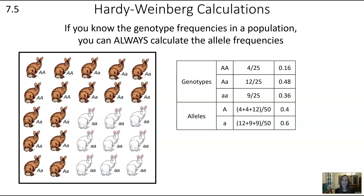So in this population, our big A allele frequency is 0.4, and our little a allele frequency is 0.6. Note that in this case the recessive allele is actually more frequent in the population — that happens. Just because an allele is dominant like big A does not mean it's more prevalent.